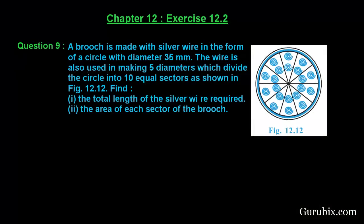Welcome friends, let us solve question number nine of exercise 12.2 of chapter 12. The question says a brooch is made with silver wire in the form of a circle, the diameter 35 millimeter. The wire is...